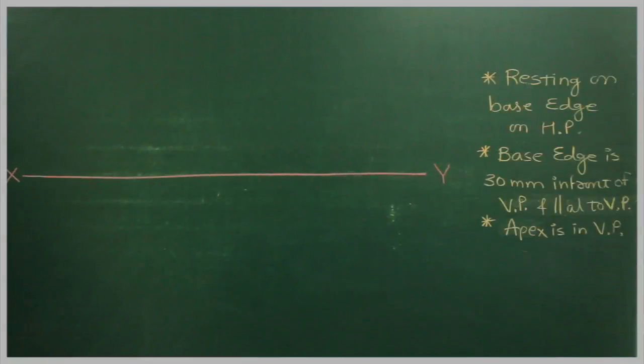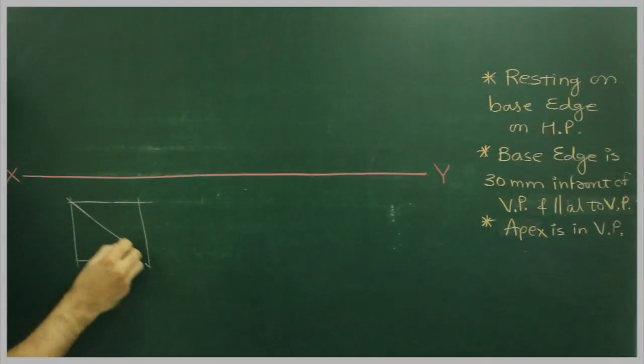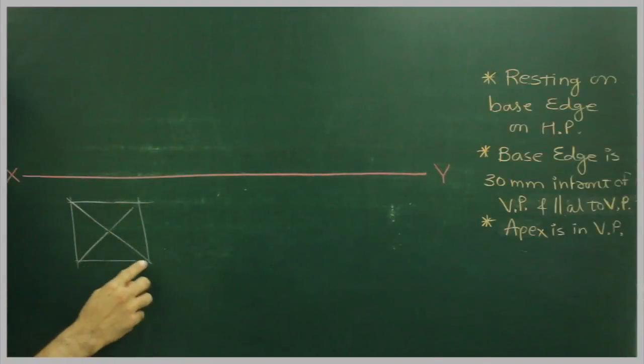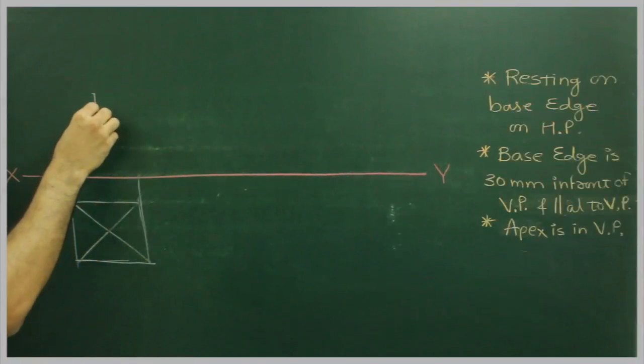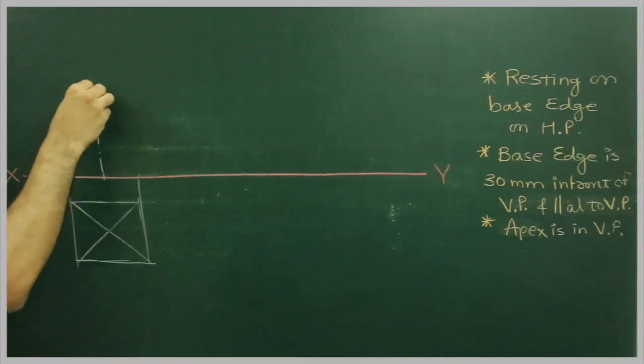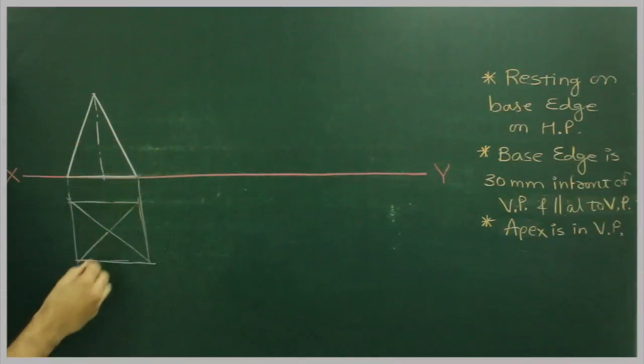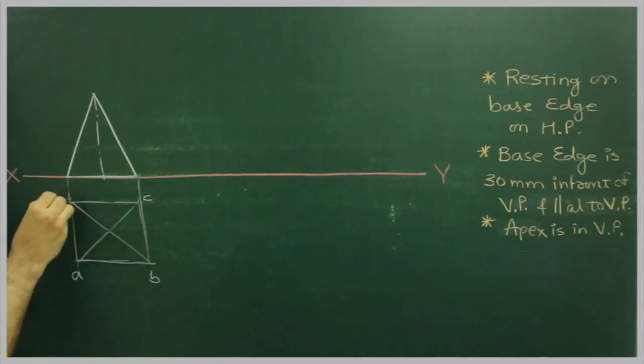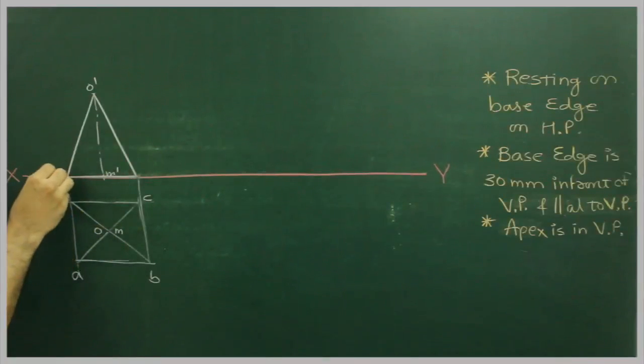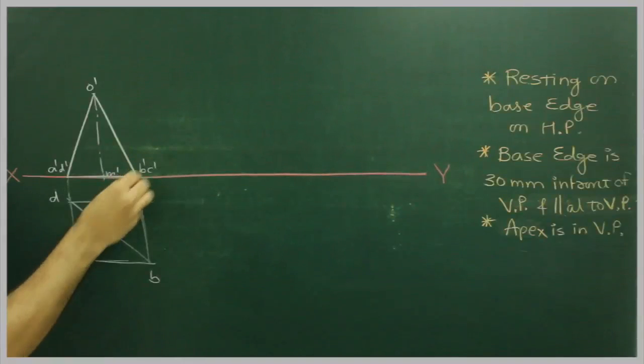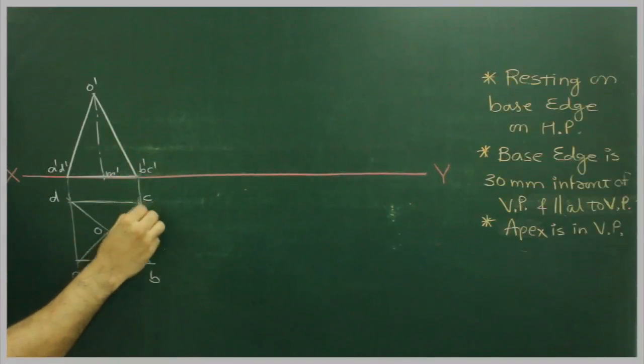Now first, we will start with resting on its base edge on HP. So first we will draw a square pyramid of side 14. So first we have this square pyramid.